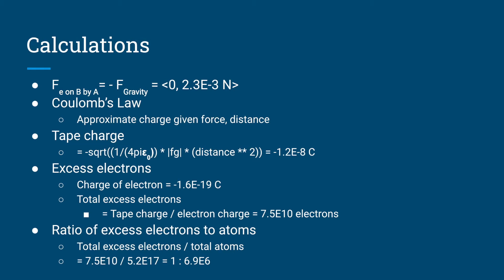As previously stated, this is due to an excess of electrons. Since we know the charge of an electron to be negative 1.6 times 10 to the negative 19 Coulombs, we can determine the total number of excess electrons to be 7.5 times 10 to the 10. Still, this is a small amount, since the ratio of excess electrons to total atoms is 1 to 6.9 times 10 to the 6.